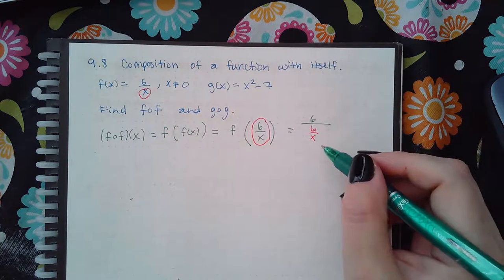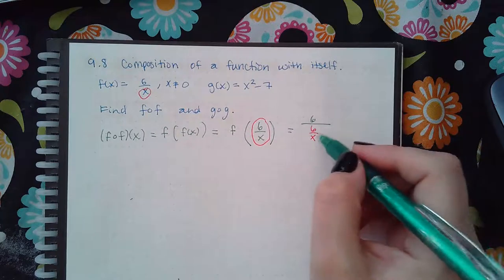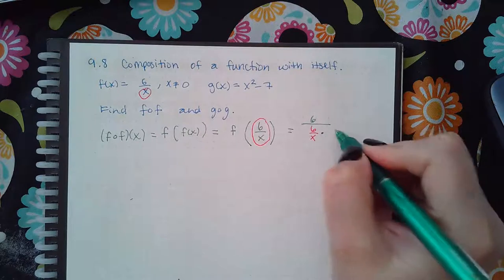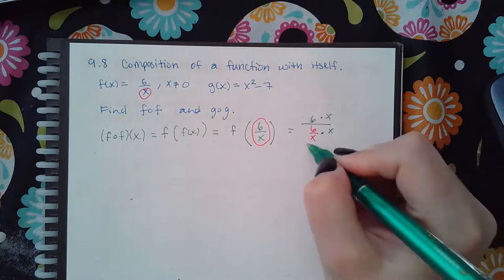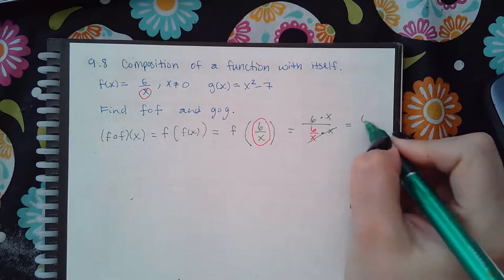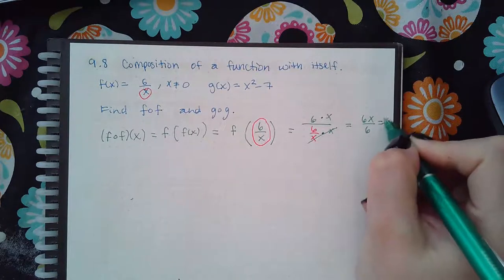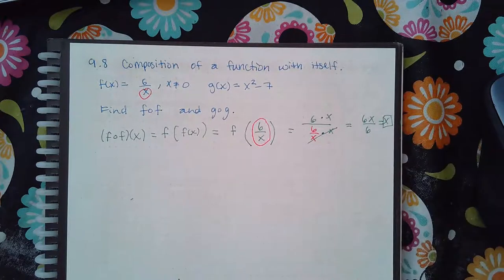And then how do you simplify this? This is a complex fraction. So you multiply the top and the bottom, every term in the top and every term in the bottom, by the LCD, which happens to be x, and it cancels this one here, but you end up with 6x over 6, and the 6s cancel, and so you end up with just x by itself.